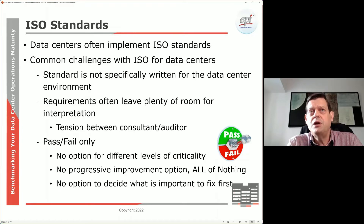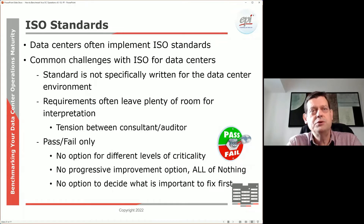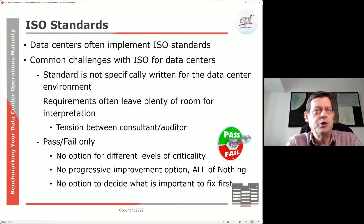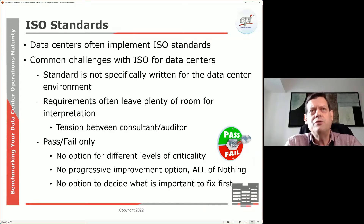Another issue we see with ISO is that sometimes the language is a bit cryptic. For example, you might read a statement like 'you shall protect the perimeter.' What does that mean? Does it mean you need to put 20 people around your building with M16 guns, or do you put electronic measures in place? What is adequate? What is enough, and what is too little? That can be quite challenging.